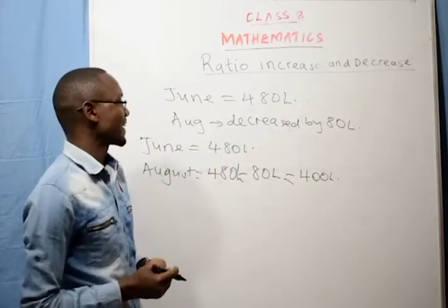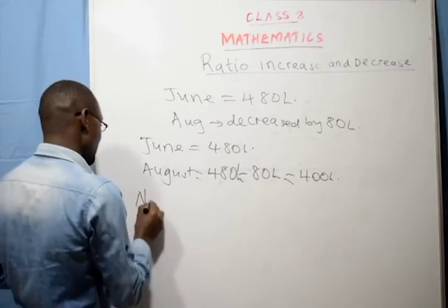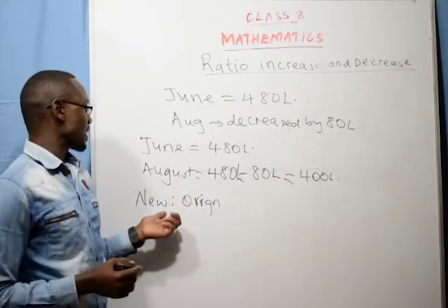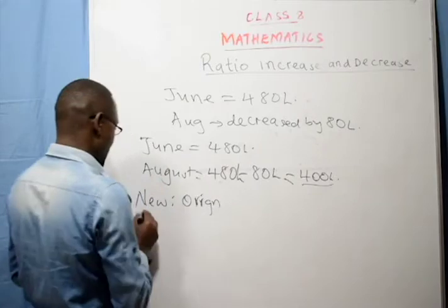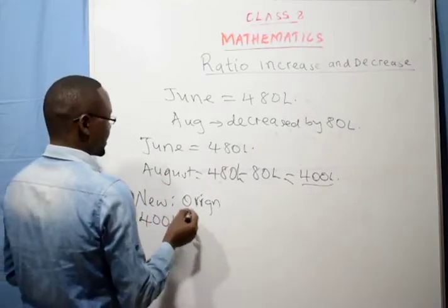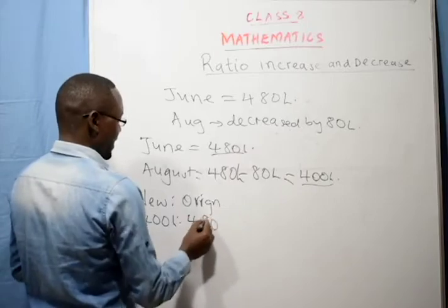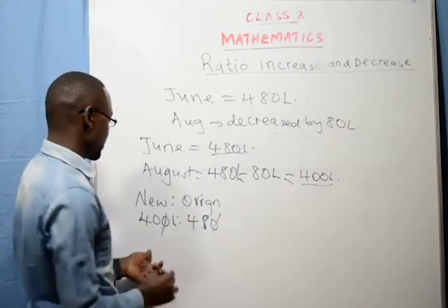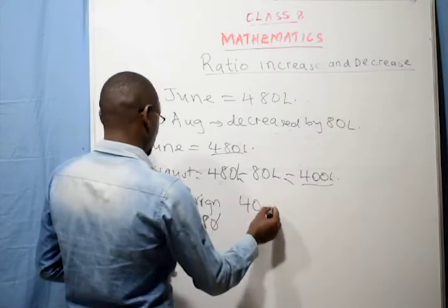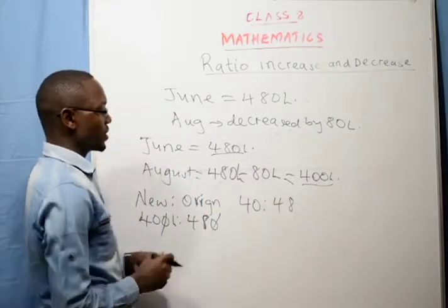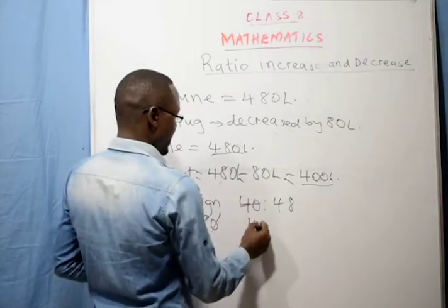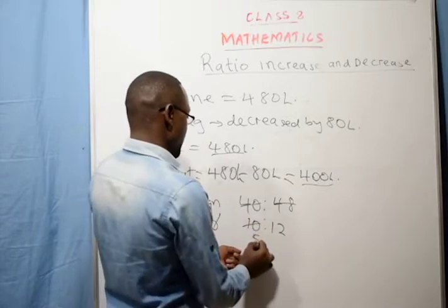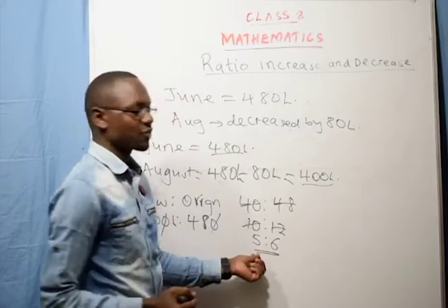What was the ratio decrease? We still use our formula, new is to original: 400 is to 480. We simplify by 10 to get 40 is to 48. We simplify by 4 to get 10 is to 12. We simplify further by 2 to get 5 is to 6. So the ratio decrease was 5 is to 6.